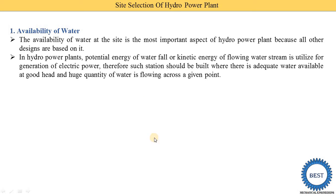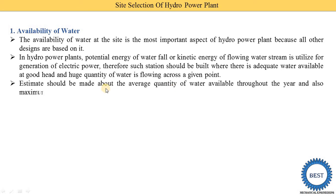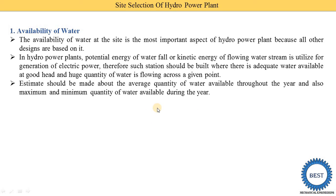Why are head and quantity more important? Because in the principles of hydropower plant, we derive one equation: P = ρgQH, meaning power produced by the hydropower plant is directly proportional to Q and H. The more quantity and head available, the more power we are able to produce. An estimate shall be made about the average quantity of water available throughout the year, and also the maximum and minimum quantity of water available during the year.